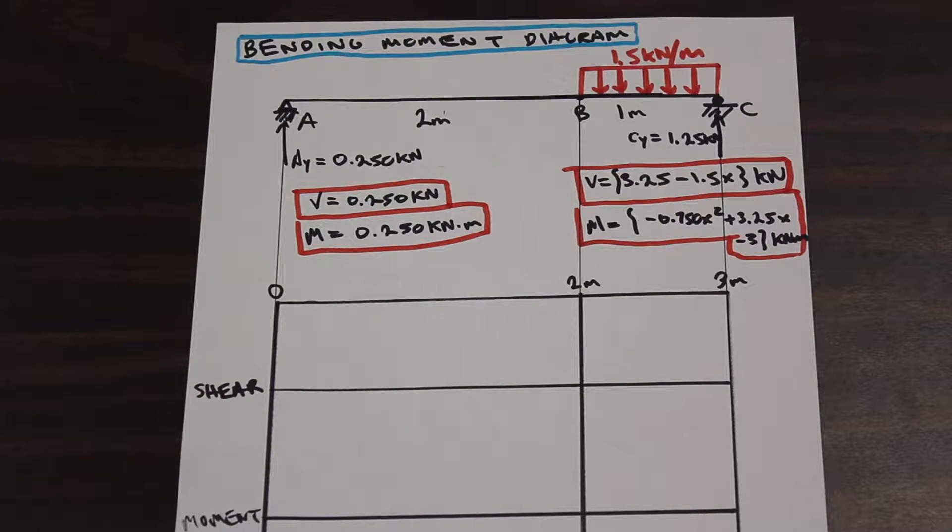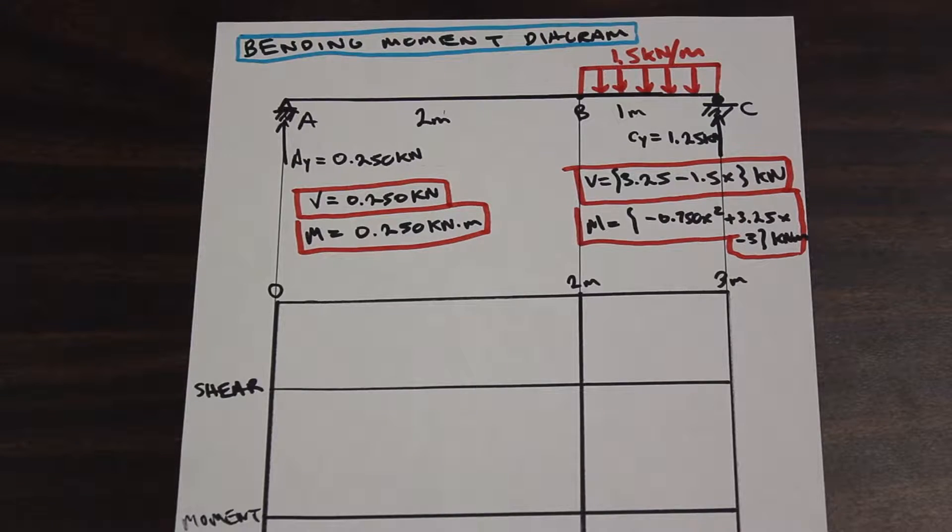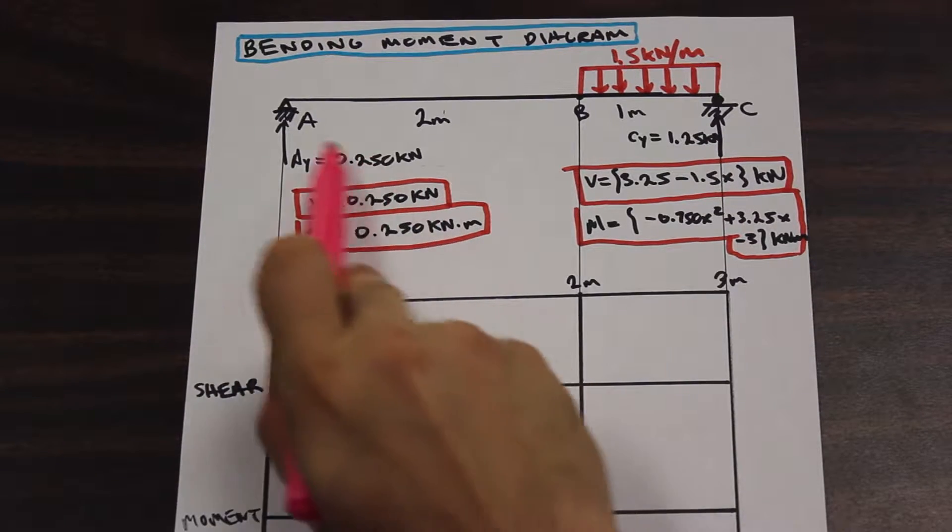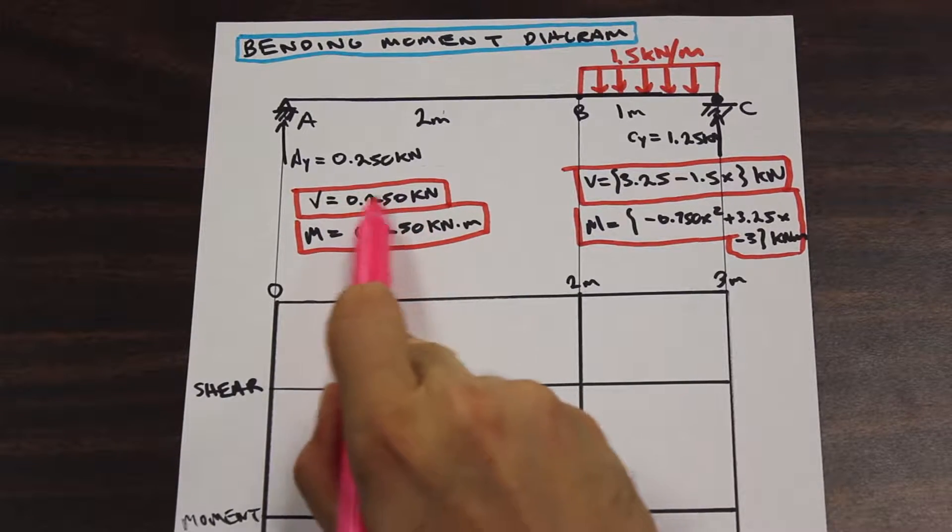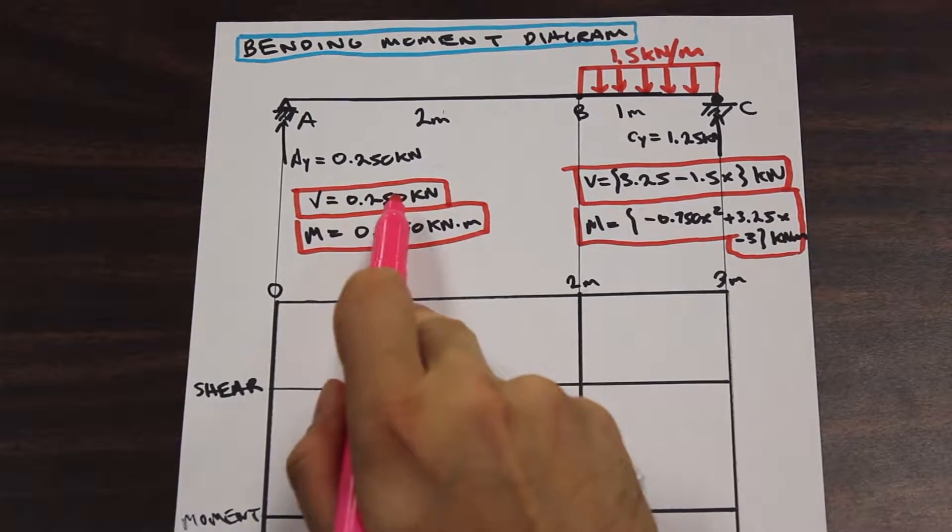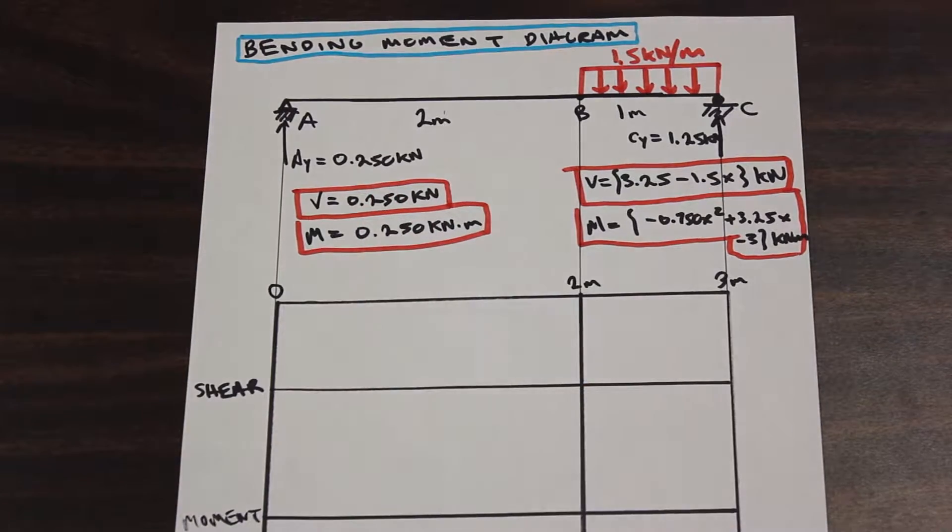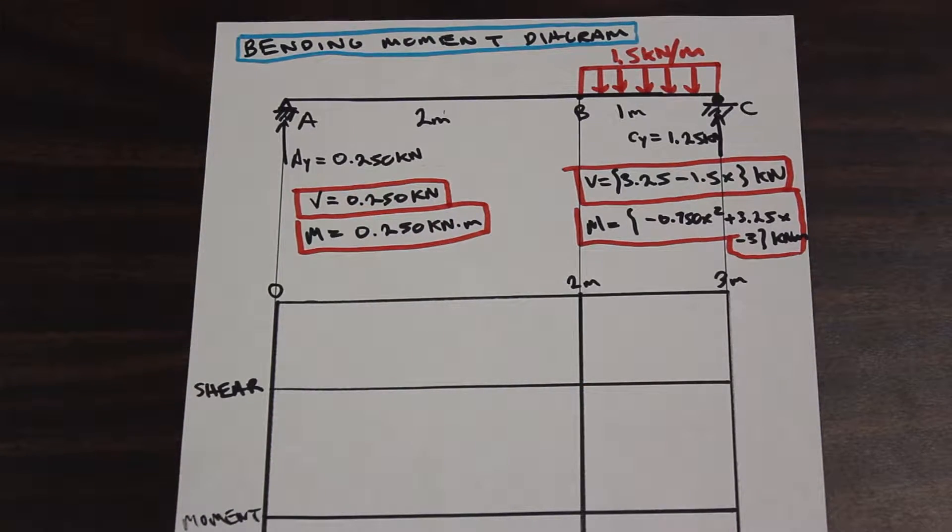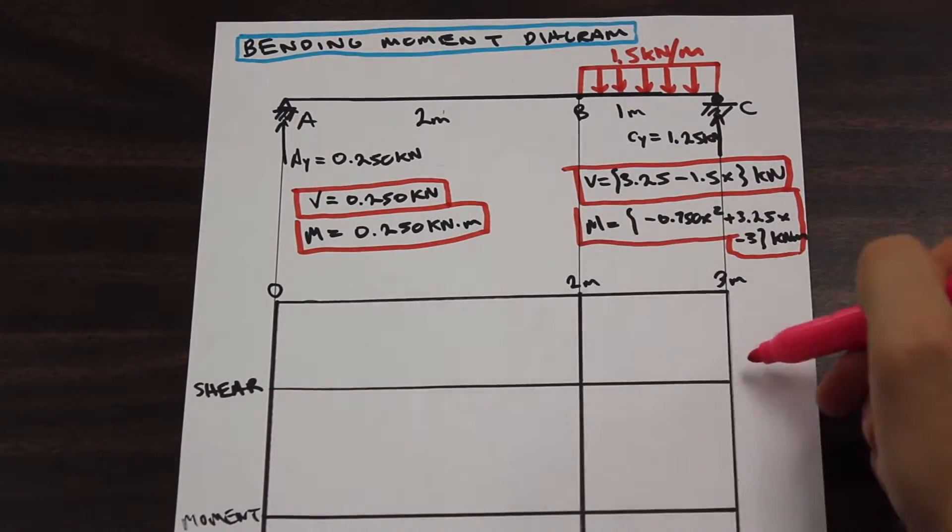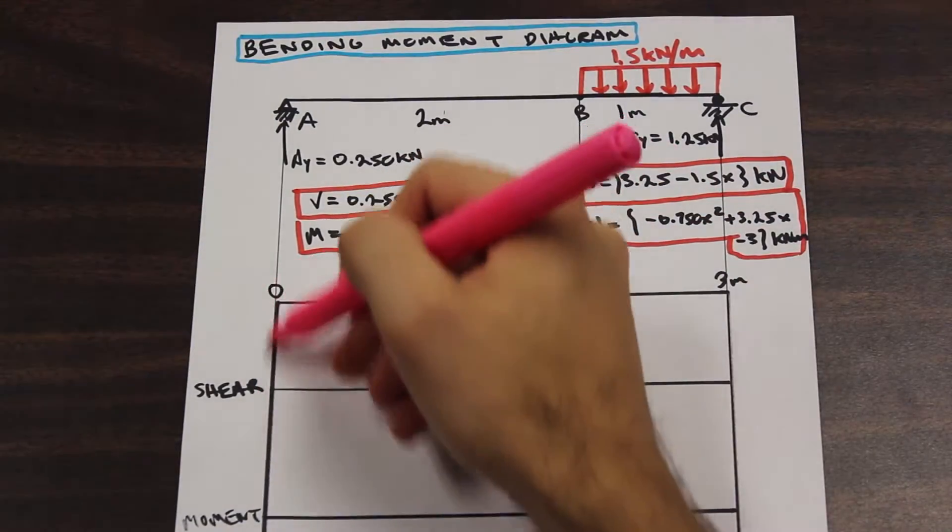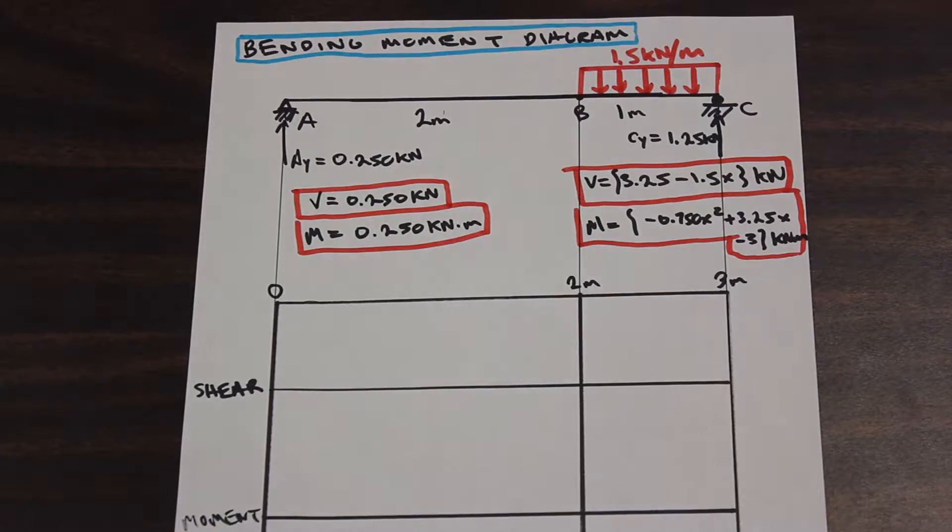So let's start with the easy one, which is the first section. That's the shear. We're going to start with the shear from A to B. And as we can see here, the shear is not variable. The shear is not varying with distance. The shear is constant. So what that means is it's just going to be a straight line, because this axis here, that's distance, and this up and down, that's shear.